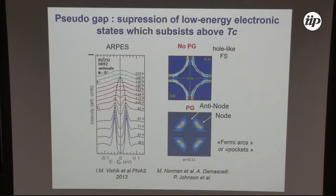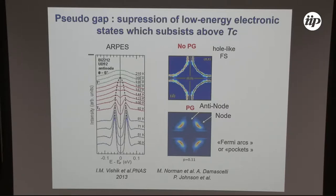Importantly, the pseudogap is anisotropic. Without the pseudogap we have a full Fermi surface. When we have the pseudogap, quasiparticles are destroyed along the principal axis of the Brillouin zone — the antinodal region — while along the diagonal of the Brillouin zone we still have quasiparticle spectral weight, which are called Fermi arcs or Fermi pockets.